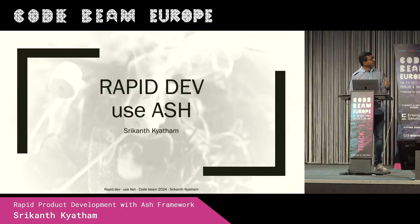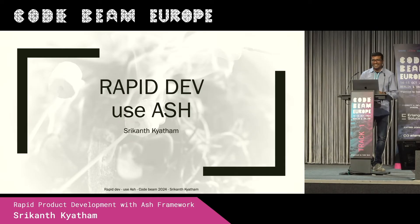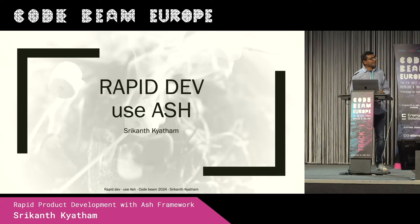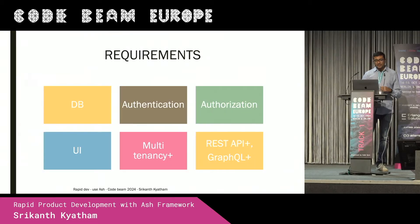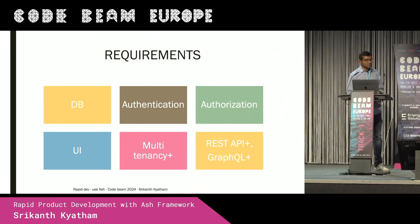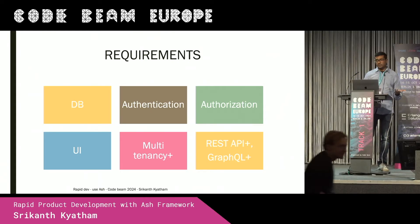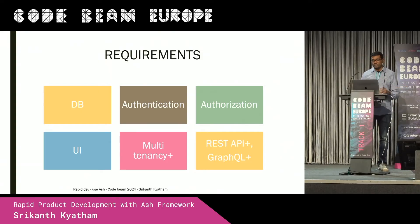You can see the pun there — 'use Ash', it has a macro. So, what is Ash? Ash is a framework which provides you a declarative API for developing Phoenix applications. Dare I say, it's Phoenix on steroids — at least it worked for us. If you think about a normal application, you need some sort of database, authentication, authorization, some UI, maybe some multi-tenancy, a REST API, or maybe GraphQL, based on your need.